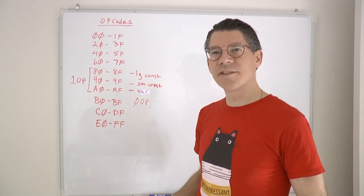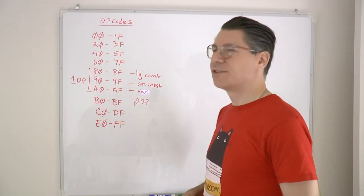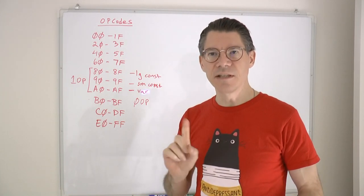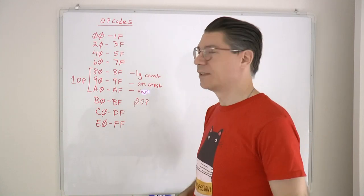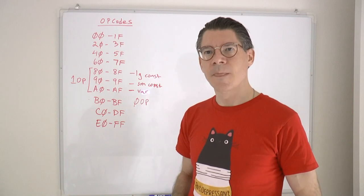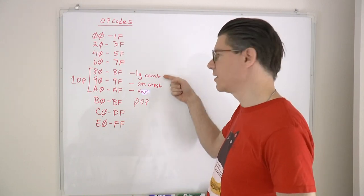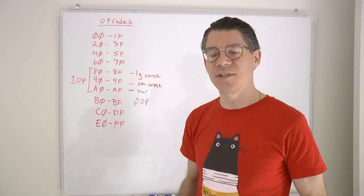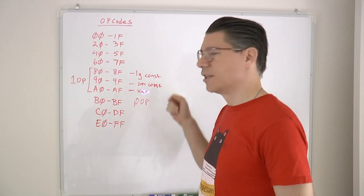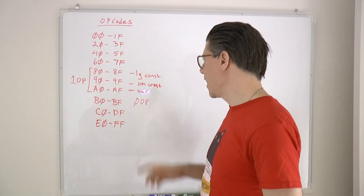The next series is the one operand opcodes — things like increment or return a value. These take a single operand, so there is one byte for the opcode and then a certain number of bytes for the operand. The one-op opcodes are divided into three sections: the first takes a large constant (a 16-bit value, or two bytes), the second takes a small constant (a 1-byte constant), and the third takes a var.